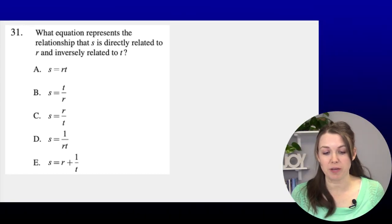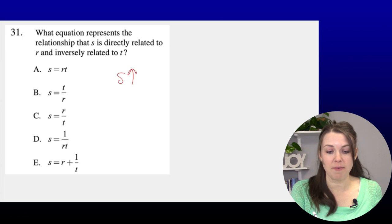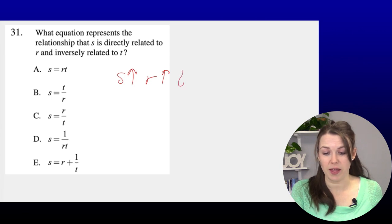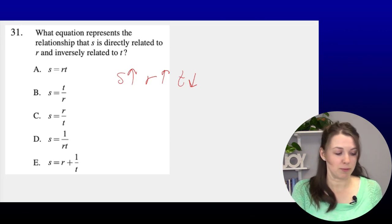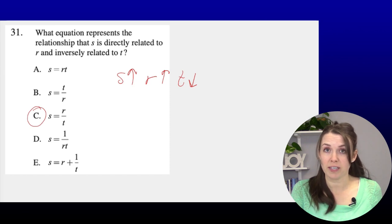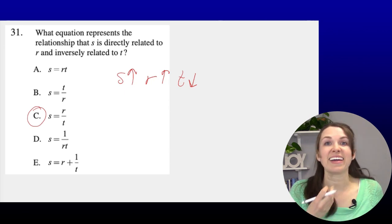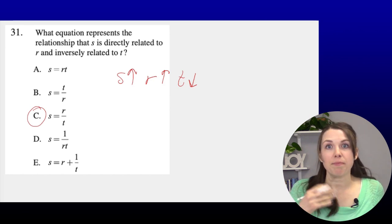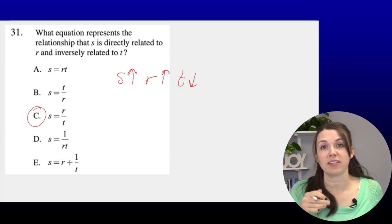Number thirty-one: Which equation shows S is directly related to R (when S increases, R increases) and inversely related to T (when S increases, T decreases)? The answer is C, where S = R/T. If S and R both go up, T must go down to keep the relationship constant. Using simple numbers to plug in can help verify this.